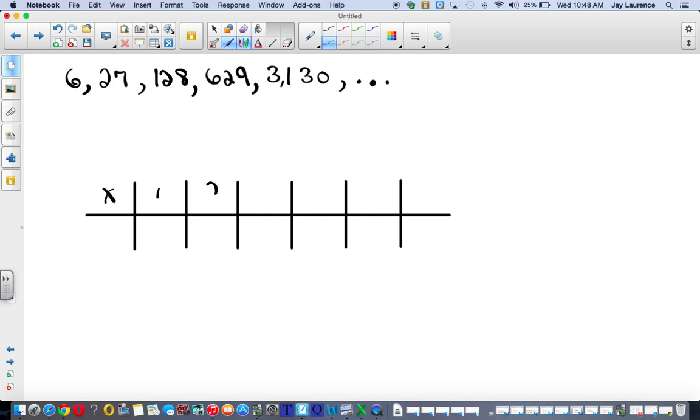Let's see. I've got x numbers: 1, 2, 3, 4, 5, and number f of x. 6, 27, 128, 629. I think these are right. Okay, I was just checking really quick. 3,130. And so I go find my first differences.